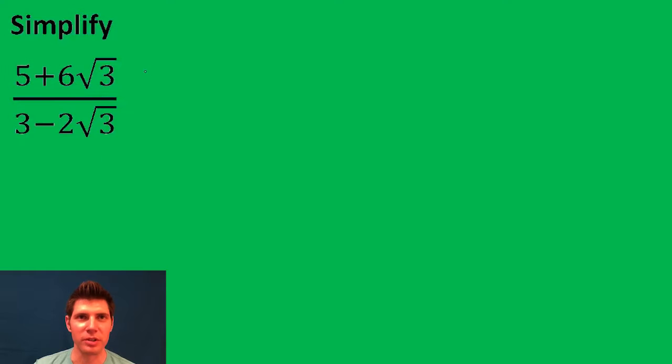The way we get rid of that square root is multiply top and bottom by the conjugate. The conjugate is 3 plus 2 root 3 in this case. It is just the opposite sign here for the bottom.